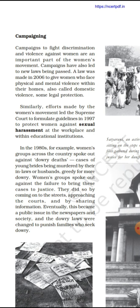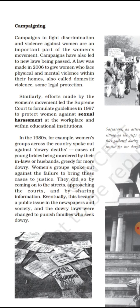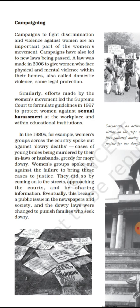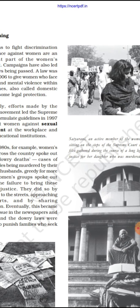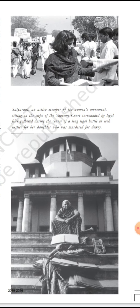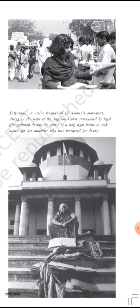Women's groups spoke out against the failure to bring these dowry cases to justice. They did so by taking to streets, approaching courts, and sharing information. Eventually these became a public issue — newspapers, society, and change led to families being pushed to seek justice. There is a picture here of Satyarani, an active member of the women's movement, sitting on the steps of the Supreme Court surrounded by legal files gathered during a long legal battle to seek justice for her daughter who was murdered for dowry.